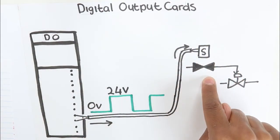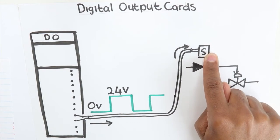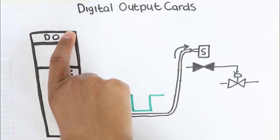And if the program wants the valve to close, it will send a 0 volt signal to the solenoid valve via the digital output card.